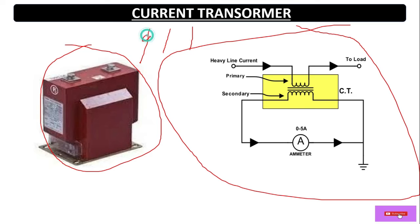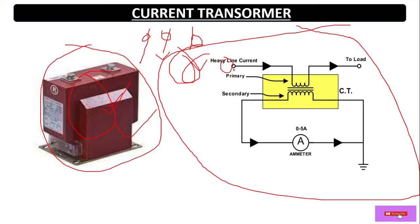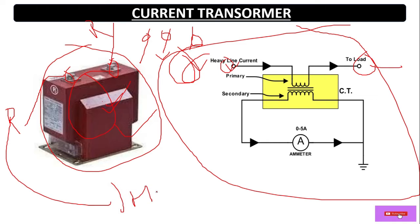This is the diagram for one CT. If we want to measure the current for a three-phase system, then we have to install one CT for each line. The CT is always connected in series — one line here, one line here, and one line here. For example, R phase goes in through P1 and out from P2, then goes to the HT panel and transformer. The secondary side is always connected to the meter.